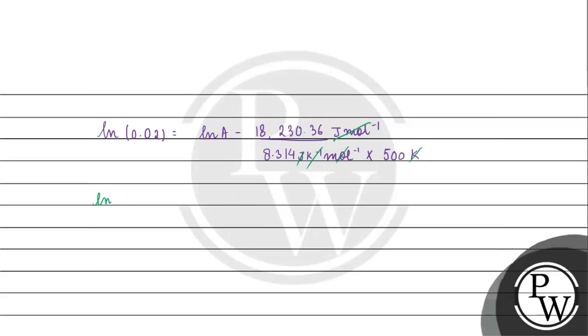We get ln 0.02 plus 18,230.36 by 8.314 into 500 equals ln A. We get minus 3.91 plus 4.385 equals ln A.